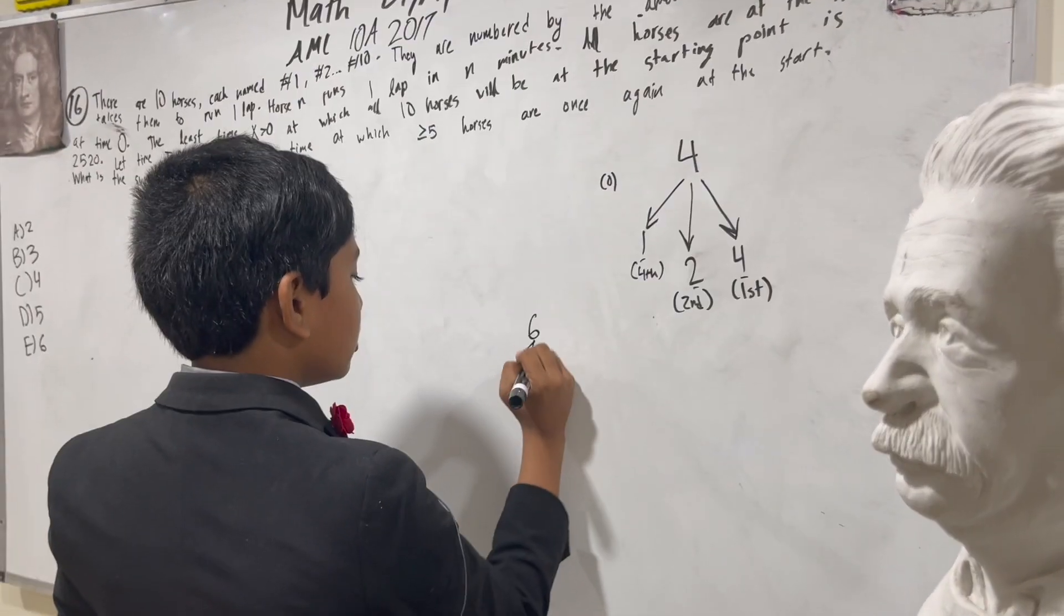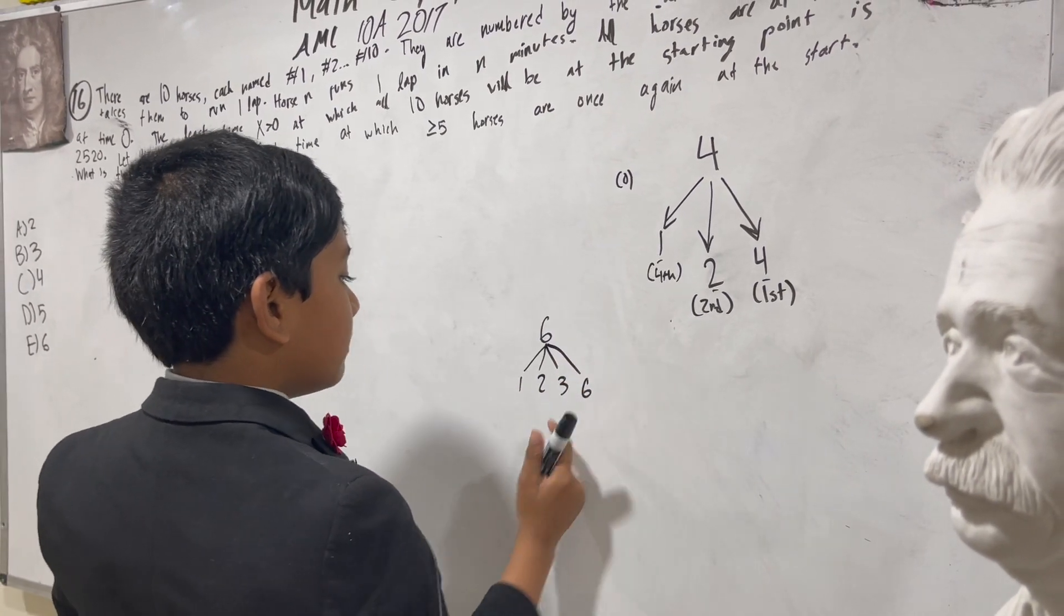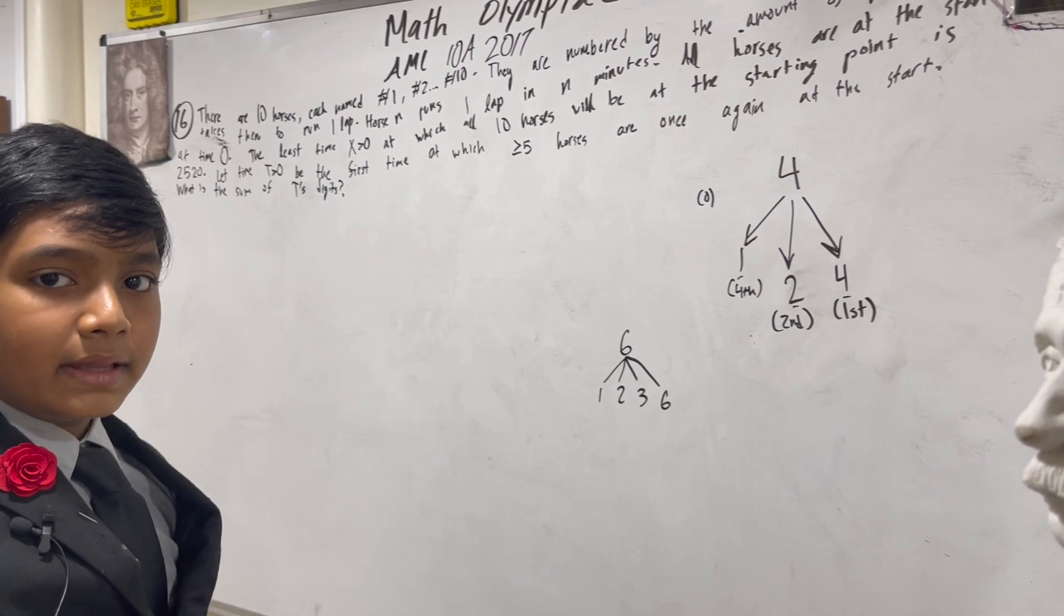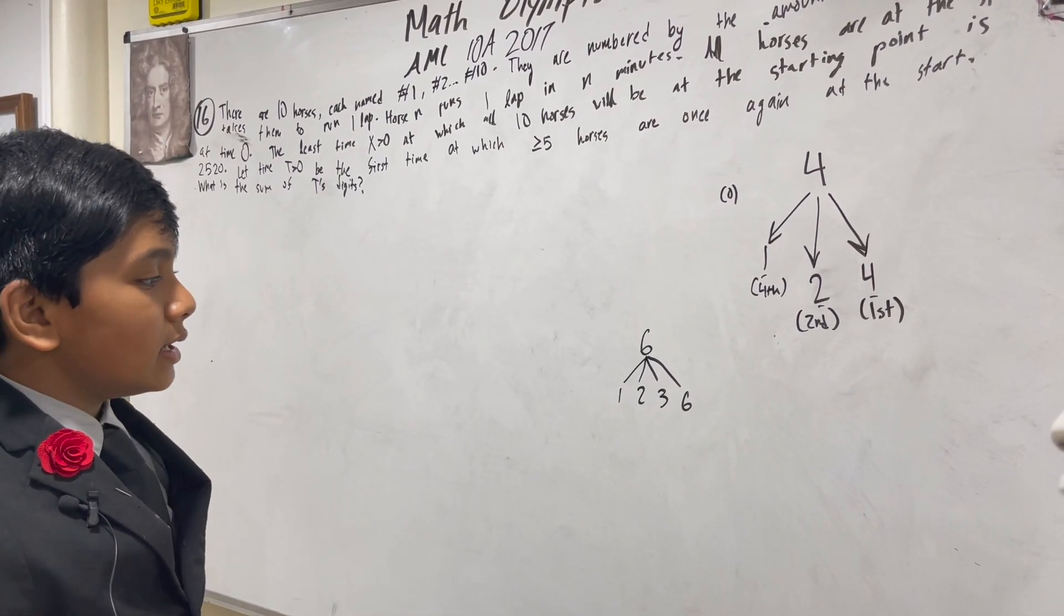Six has one, two, three, and six. Meaning that horses one, two, three, and six are going to be there at that time. Okay, we're getting close.